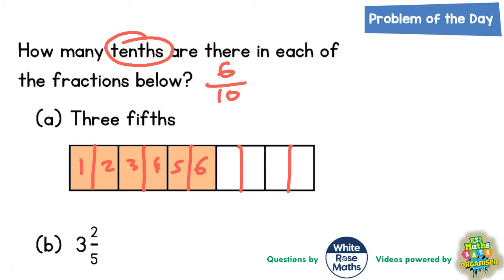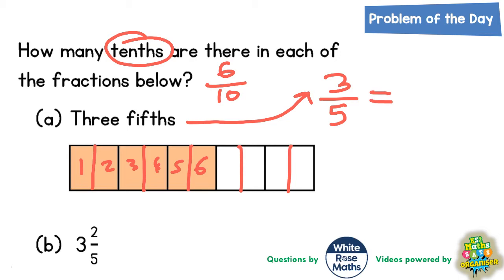The other way you could do that is by ignoring the diagram and just looking at equivalent fractions. Take the 3 fifths and write it as a fraction. Pop an equal sign next to it because we're going to make an equivalent fraction, and we need to figure out what goes in the two boxes to make an equivalent fraction out of tenths. Since we're dealing with tenths, you would put 10 in the bottom.